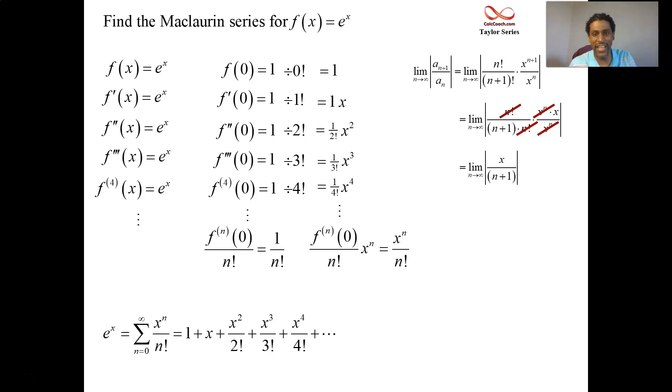Leaving us with the absolute value of x over n plus 1. And so when you're doing the ratio test, it's got to be less than 1. We force this to happen. What would make this less than 1? Now x is a constant. n is going to infinity. A constant divided by something that's going to infinity is going to be 0, which is always less than 1, no matter what the constant x is.